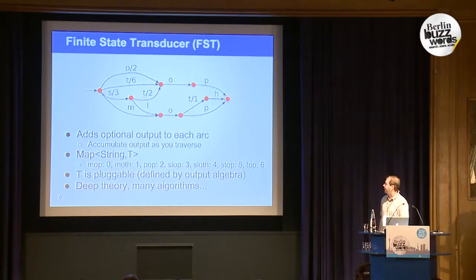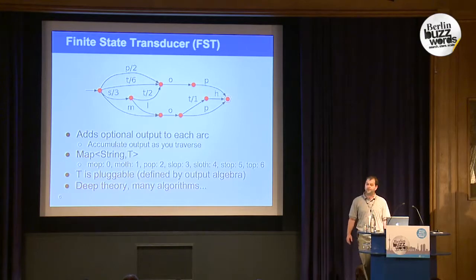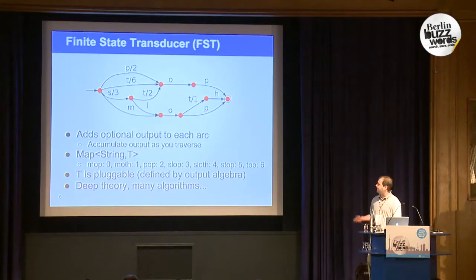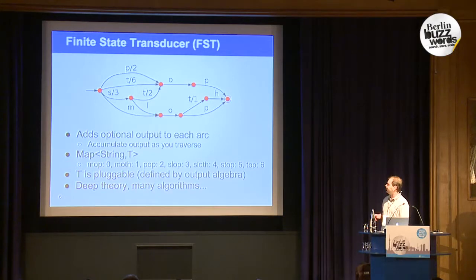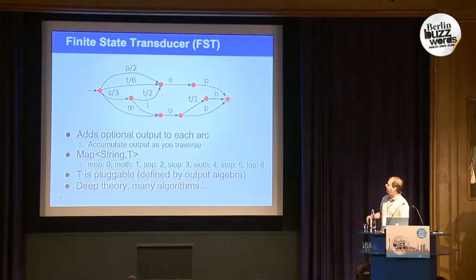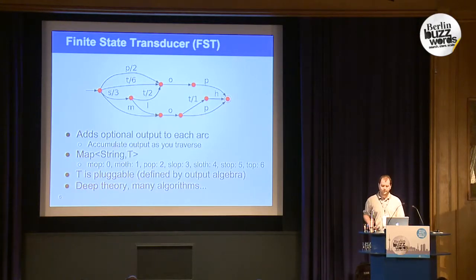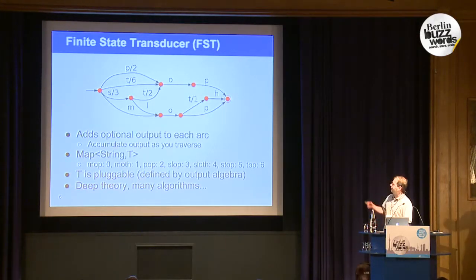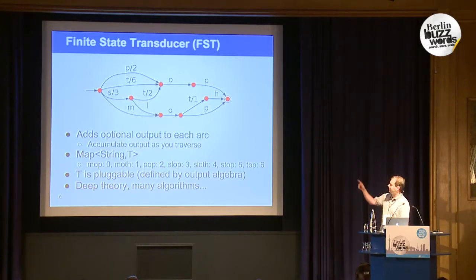The transducer is more like a map. Instead of just a set, we have a value we can associate with each key. So in this case, we've added some numbers for each of these words. The values are also shared in the sense that as you traverse, you add the numbers together and get the result. If you look at something like 'stop,' you traverse and get three plus two, which gives you five.